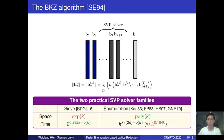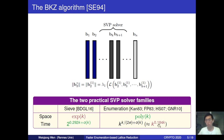The two most practical SVP solver families are implemented by sieve and enumeration respectively. Sieve-based implementations take an exponentially large space, while enumeration uses only polynomial space. For enumeration the running time is super-exponential, while for sieve it is just exponential. Even though the dominating constant for enumeration is worse than for sieve, the block factor will anyway eliminate this advantage once K is large enough.